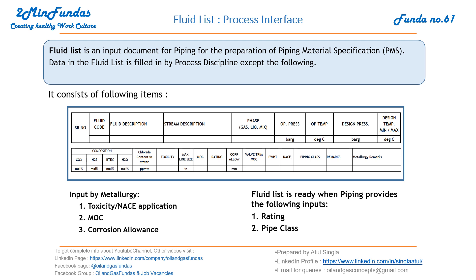The fluid list consists of the following items. If you see this table, it contains: serial number, fluid code, fluid description, stream description, phase, operating temperature and pressure, design temperature and pressure, and composition — including CO₂, H₂S, BTEX, H₂O, and chloride content.